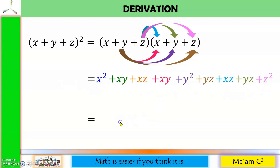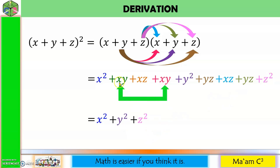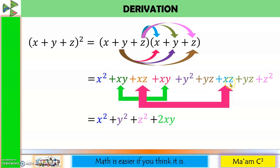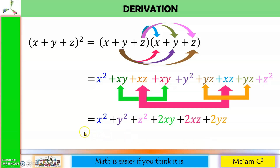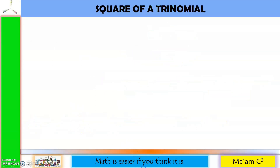Let us combine like terms. Let us first write the variables with exponents of 2: x squared, y squared, z squared. Now we have 1xy here and another 1xy, so plus 2xy. 1xz here and another 1xz, so plus 2xz. And 1yz here and another 1yz, so plus 2yz. So here is the answer for quantity x plus y plus z squared — this is the square of a trinomial.